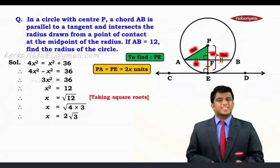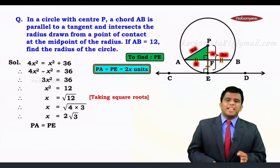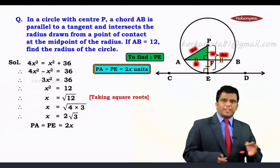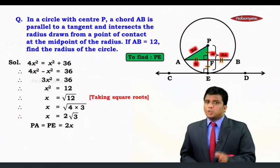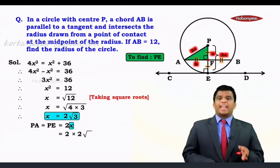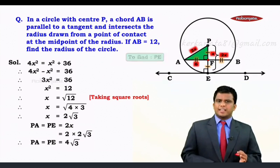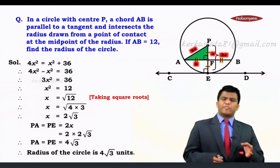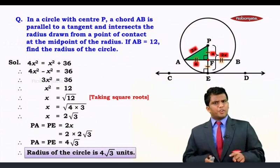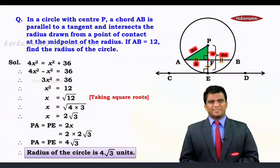Right, but we never wanted x. We wanted the radius. PA and PE, the value is 2x that we assume. So 2 times 2√3, hence it now becomes 4√3. So the radius of the circle is now equals to 4√3 units. We put a beautiful looking box and that's what we need in the sum, children.